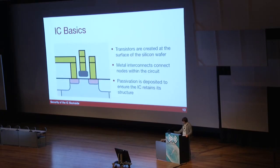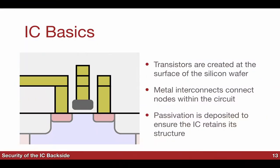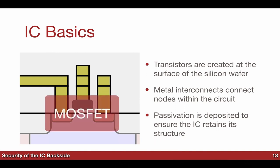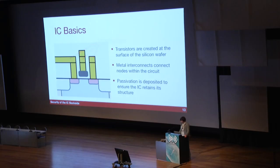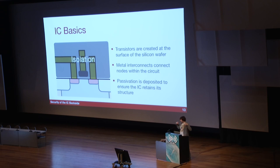What's IC reverse engineering? Transistors are created at the surface of the silicon wafer, and on top of that we have interconnects connecting the different circuit nodes. You have passivation around it. If you look at this picture, the MOSFET is here in the middle. On top of it you have metalization — the metal interconnects. Around it you also have isolation which provides the chip structure and allows you to deposit layers on top. A lot of people think you just look through a microscope and see tracks running across the chip. But in reality there are layers and layers of glass you have to remove first before you can access the chip.